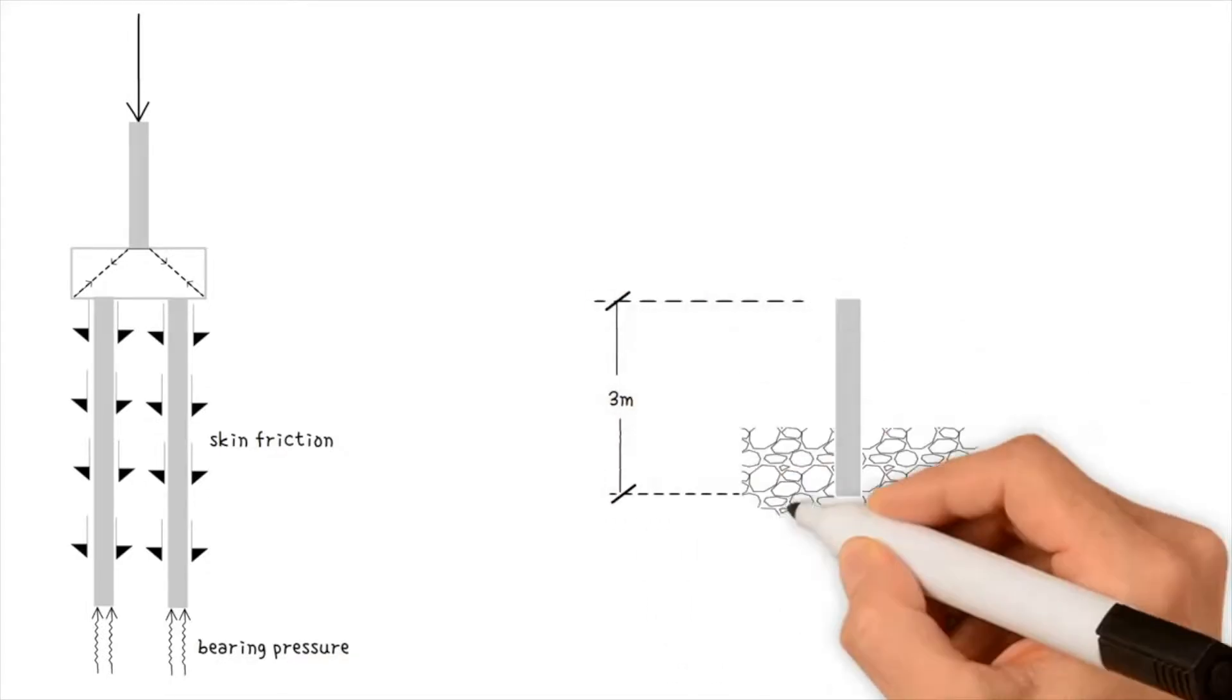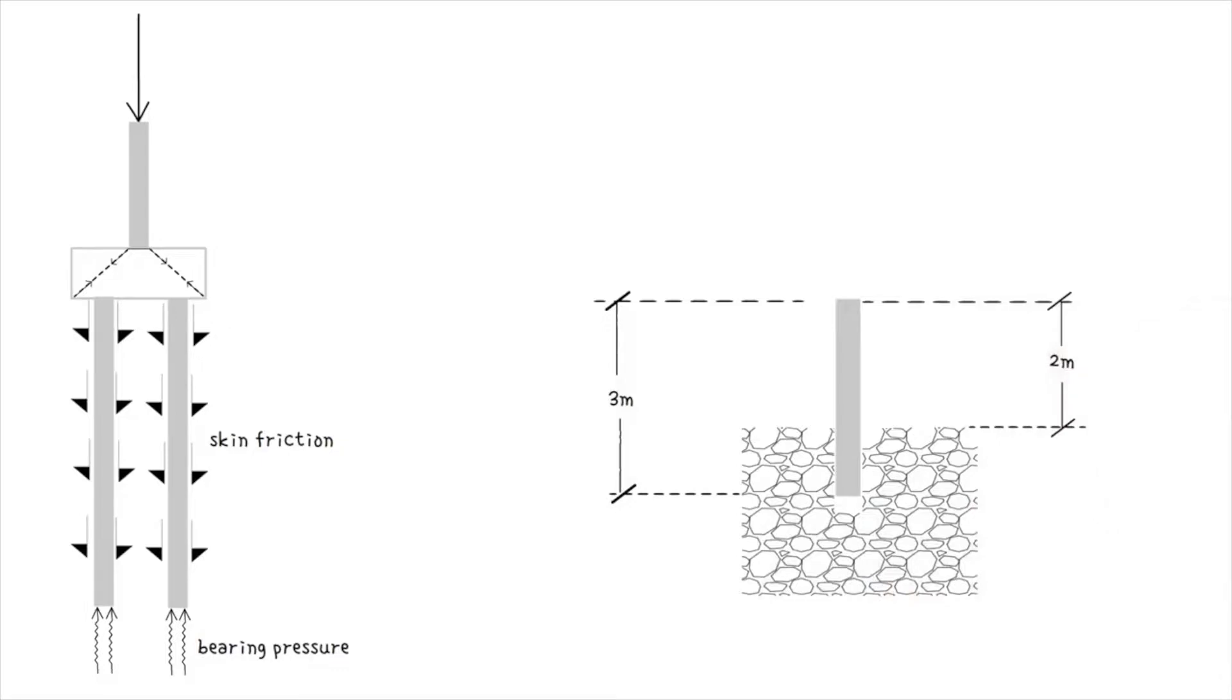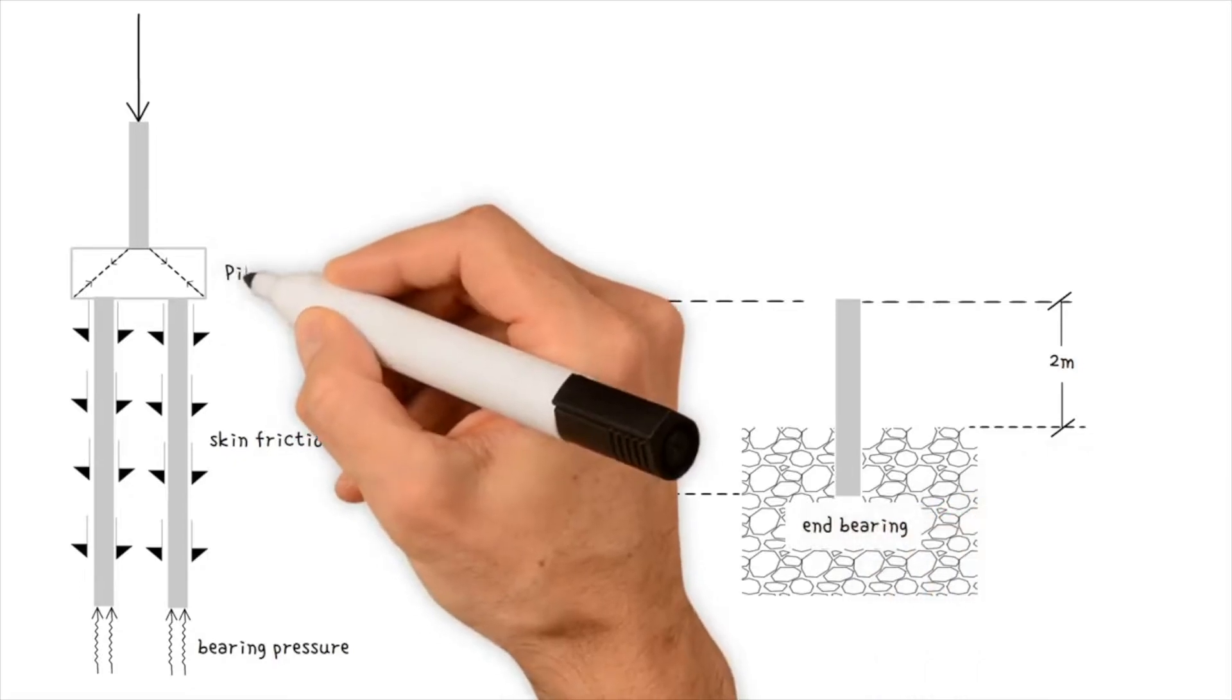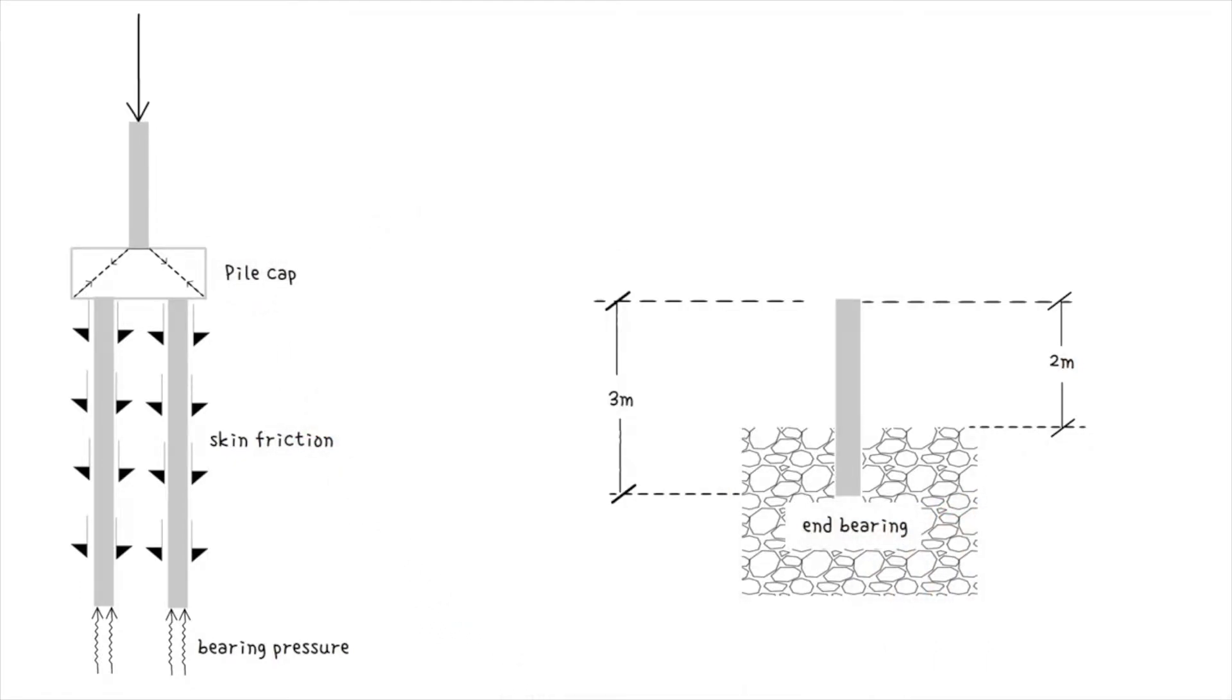A short pile, of three meters, can be used to support a foundation and rock that is two meters below the surface. In this case, the capacity is predominantly end bearing. Pile cap is essentially a reinforced concrete deep beam which transfers column load into piles.